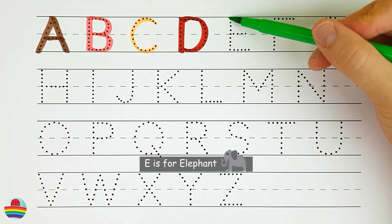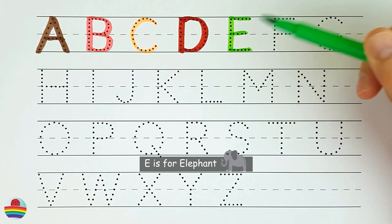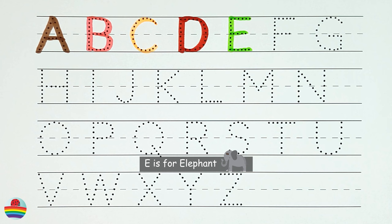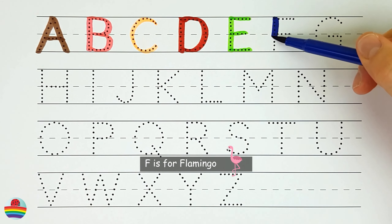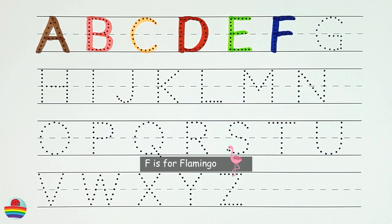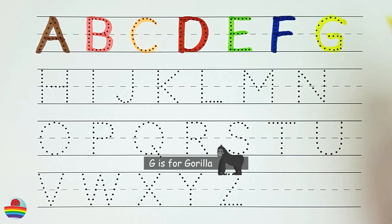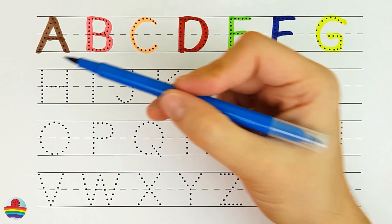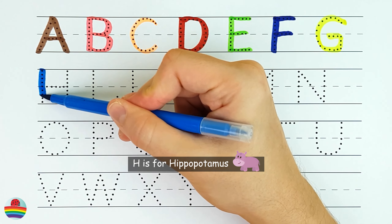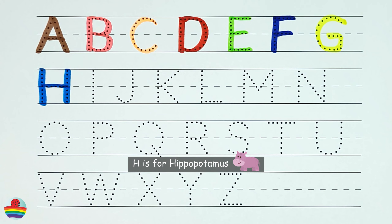E. E is for elephant. F. F is for flamingo. G. G is for gorilla. H. H is for hippopotamus.